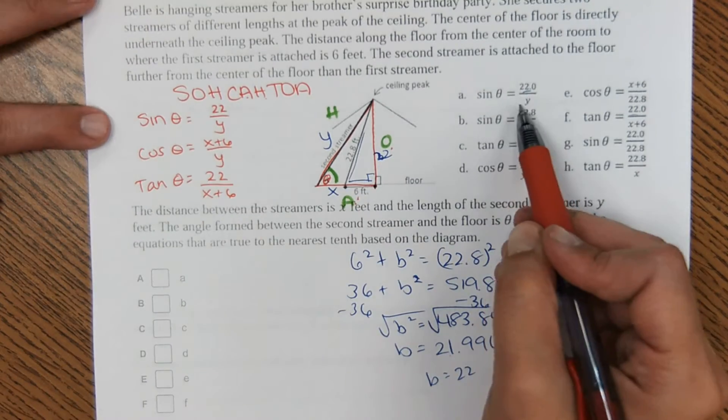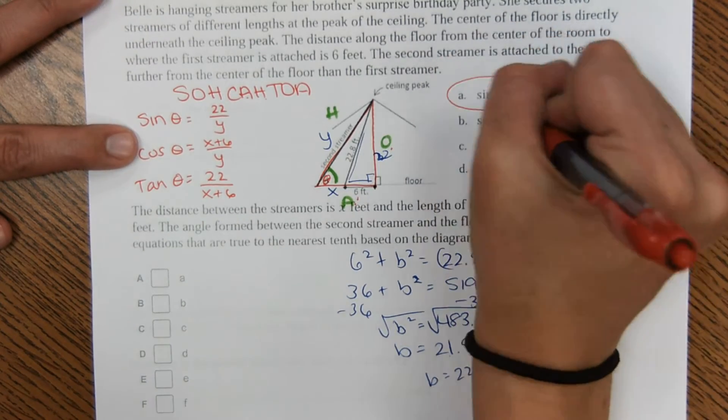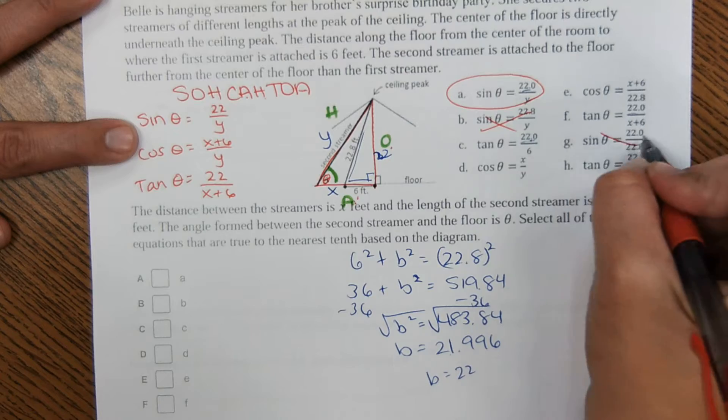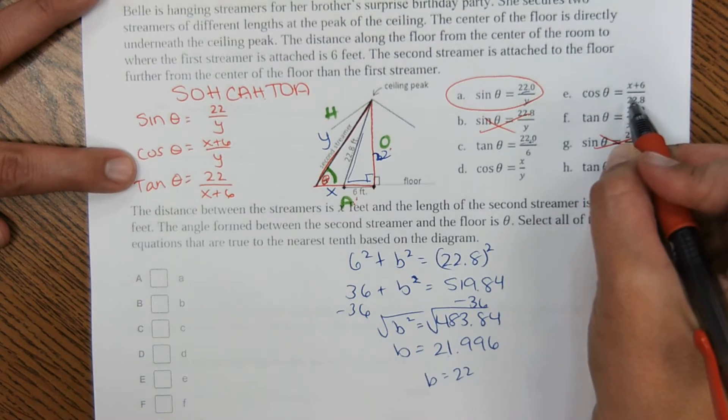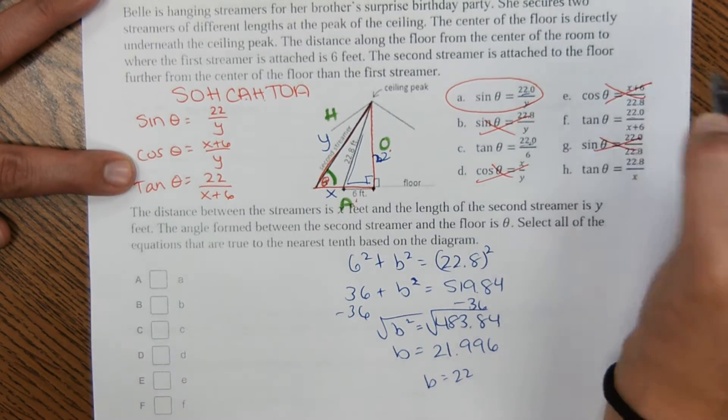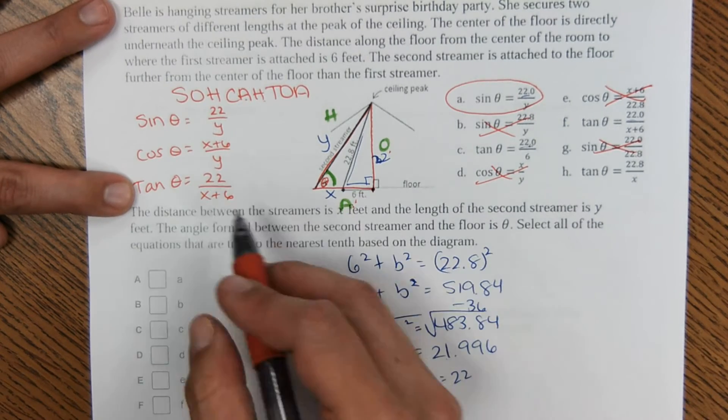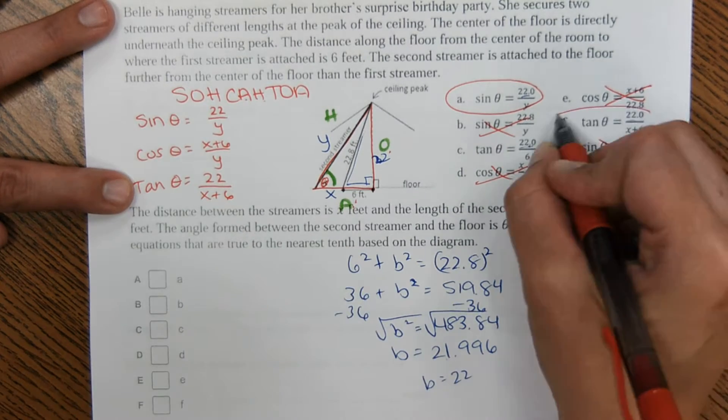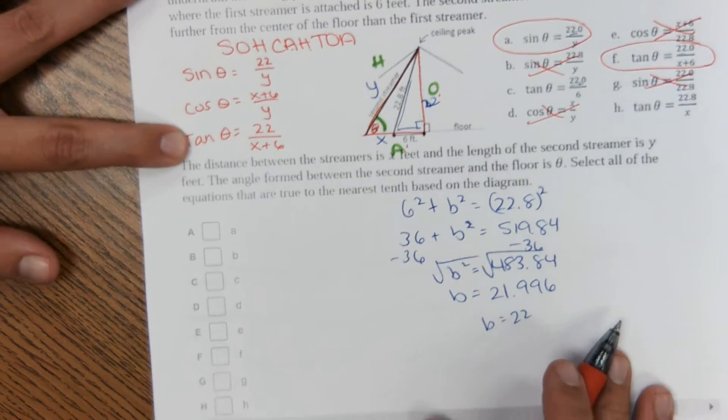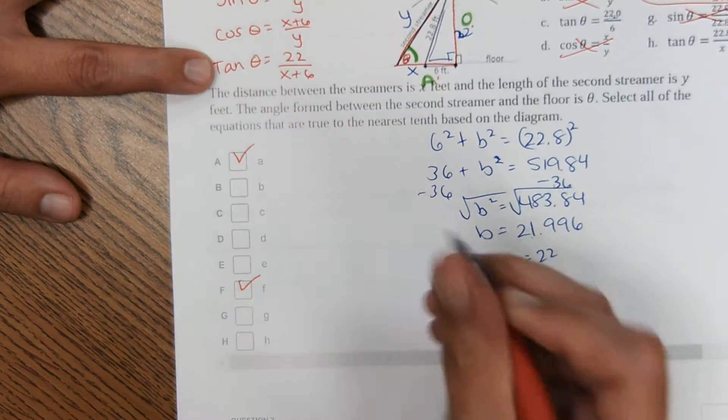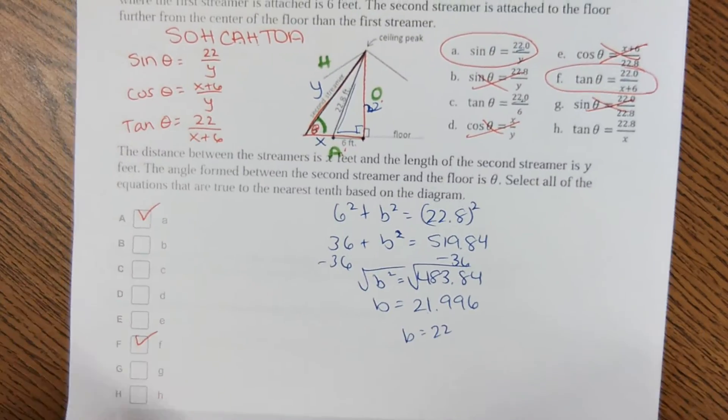So now I'm looking over at the answer choices. It looks like this is a match. The other two signs would not be correct then. Cosine, there's nothing that matches the cosine I came up with. Tangent, 22 over x plus 6, right here. So a and f are my correct answers, and I'm moving on to the next problem.